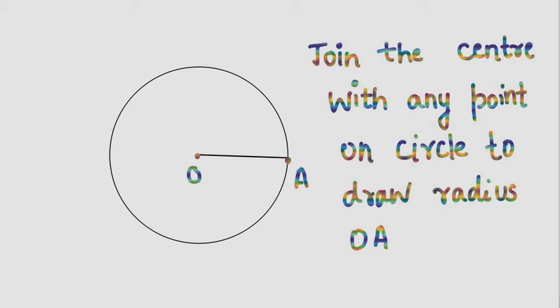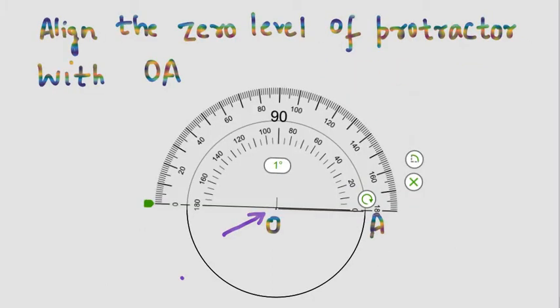Now after you have drawn the radius, you have to draw the first central angle of 160 degrees. In order to do that, align the zero level of the protractor with OA. According to the measurement of 160 degrees, the angle is an obtuse angle. So this whole angle is going to be 160 degrees.